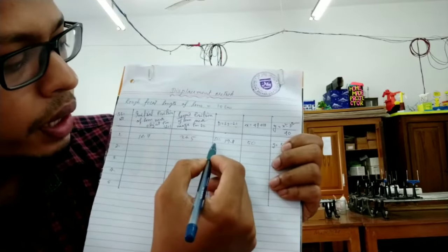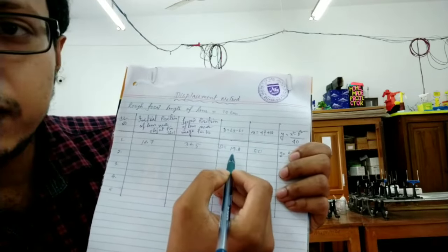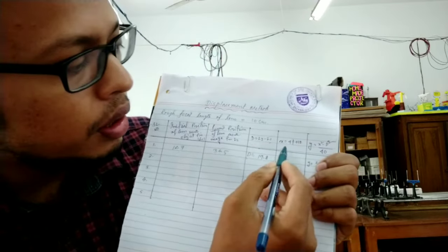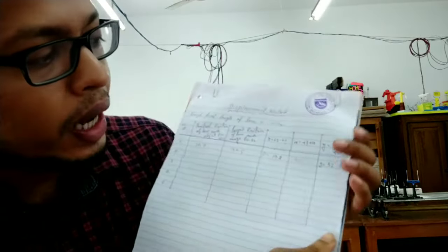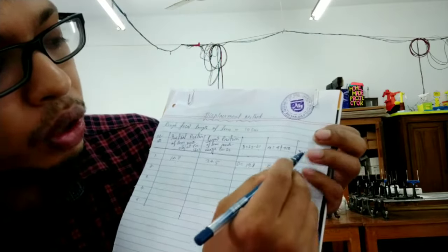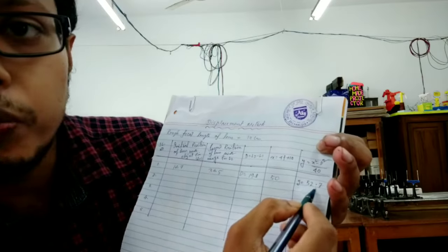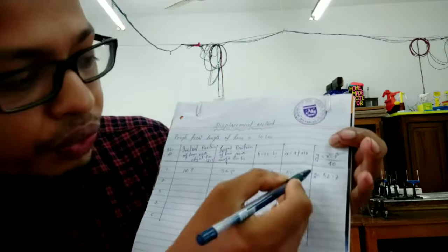Now the value of D means L2 minus L1, it came 19.8. And the X was 50. So here if you put the value of X and D, the Y came 52.7. Okay, this is how 5 readings you have to take.